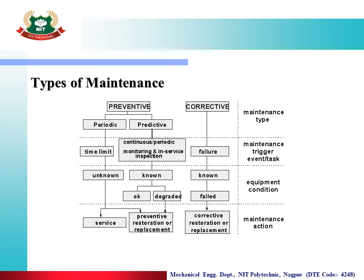In periodic maintenance, whatever time limit is set, at that time we perform maintenance of the steam power plant. For example, if we need to check the boiler elements and the schedule is 15 days, then every 15 days we check it — that is called periodic maintenance, and we service that boiler or component inside the steam power plant.